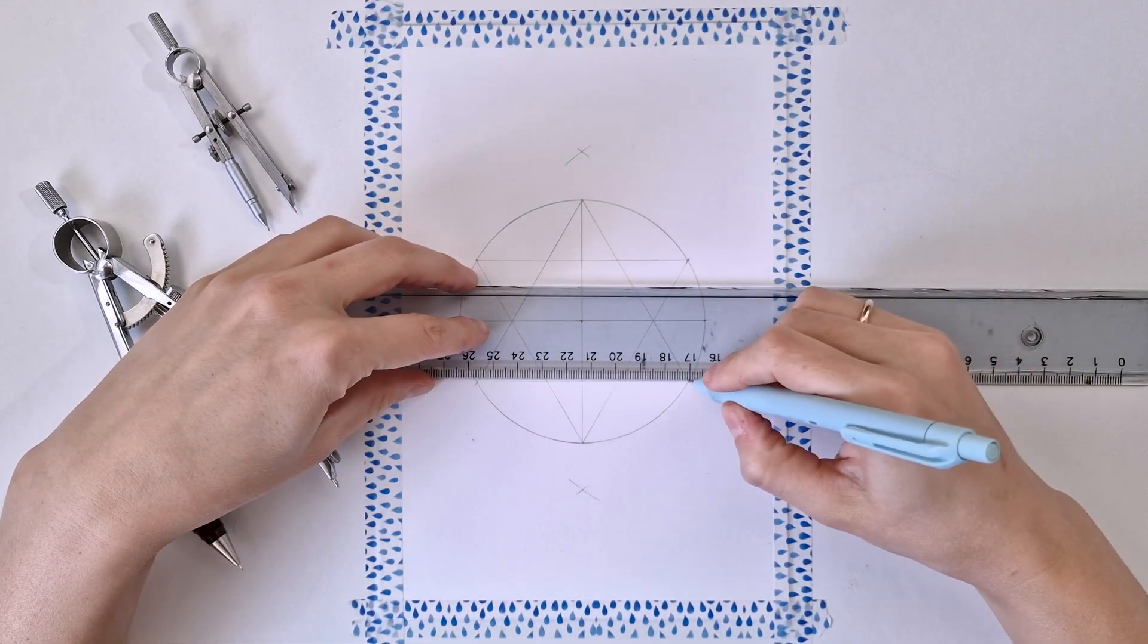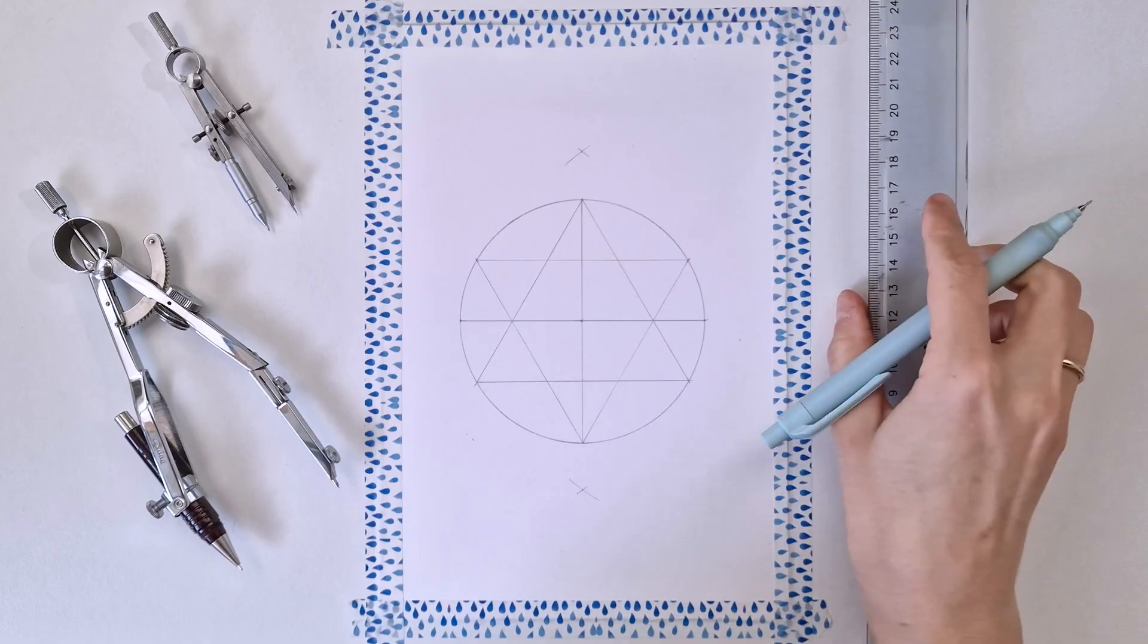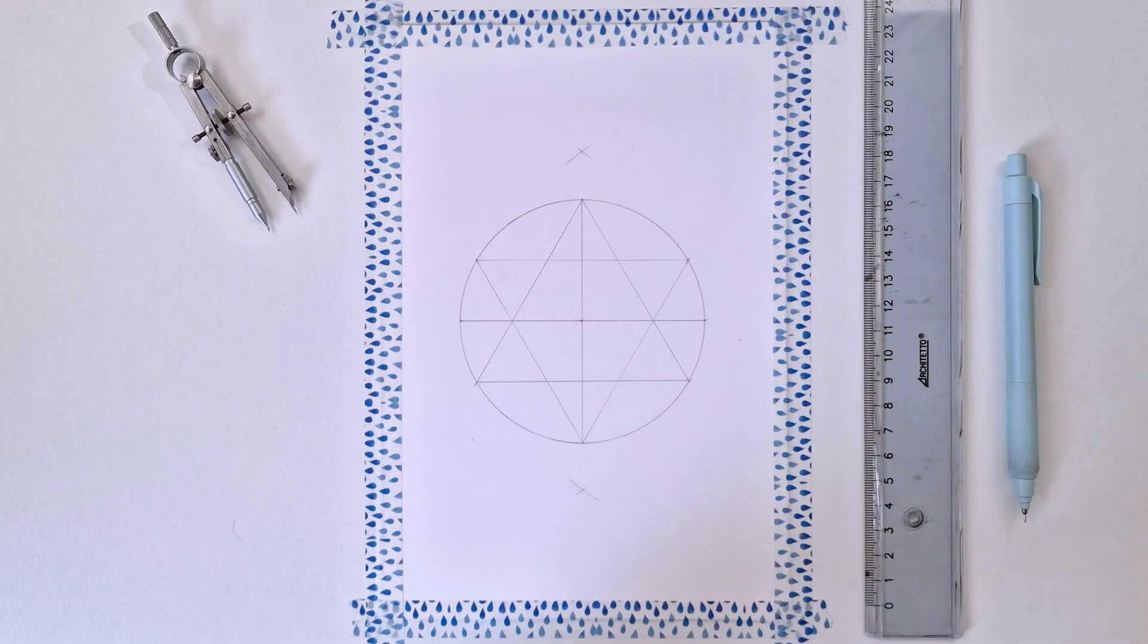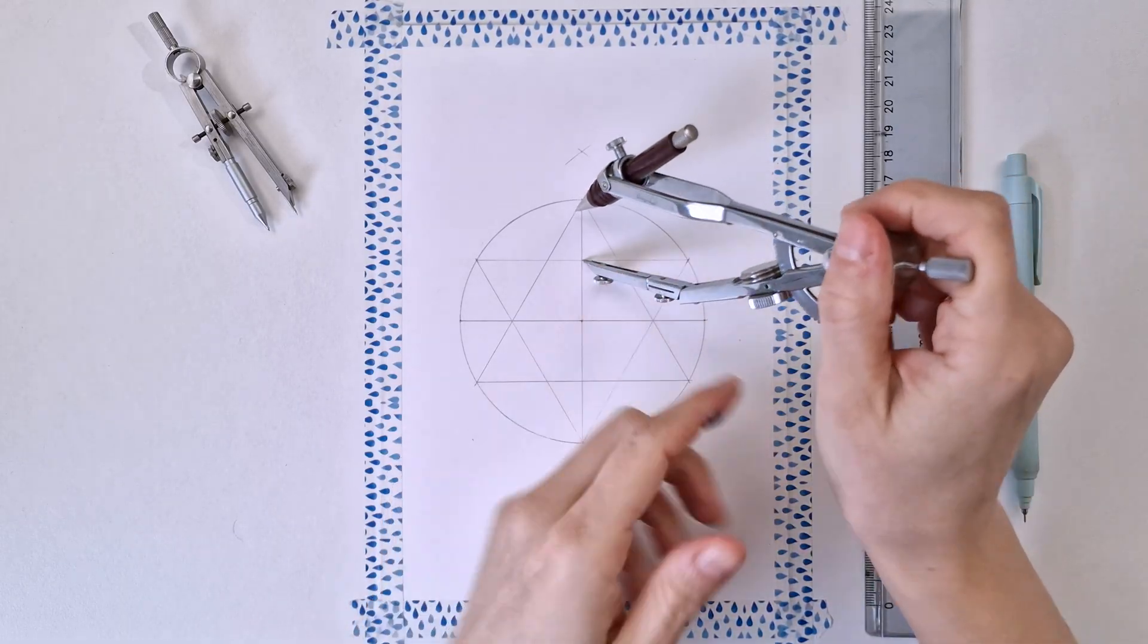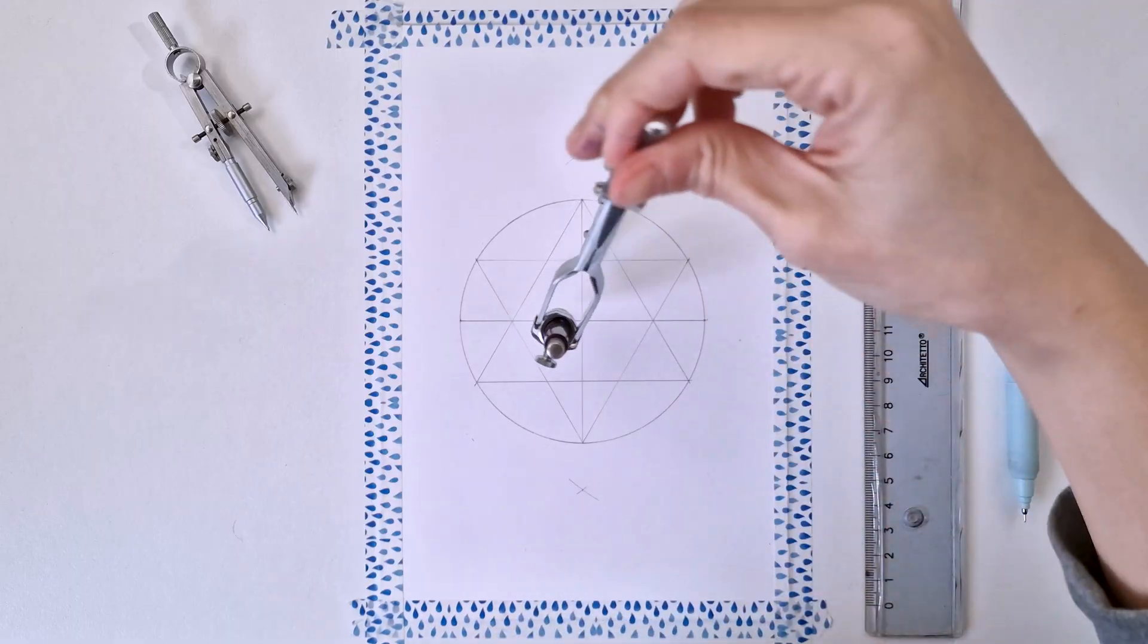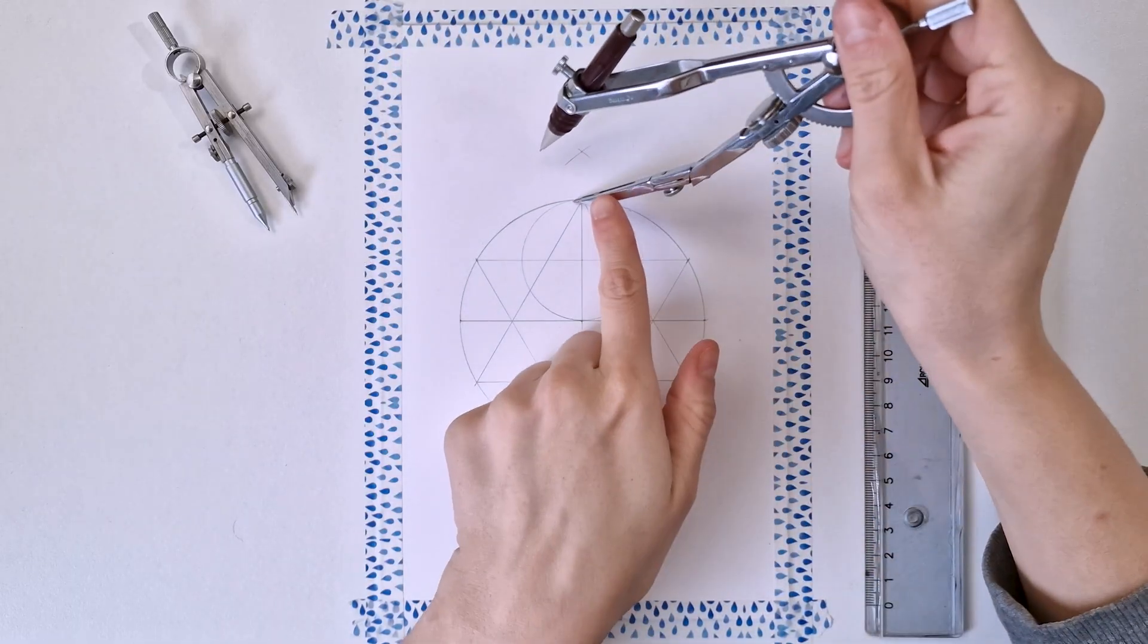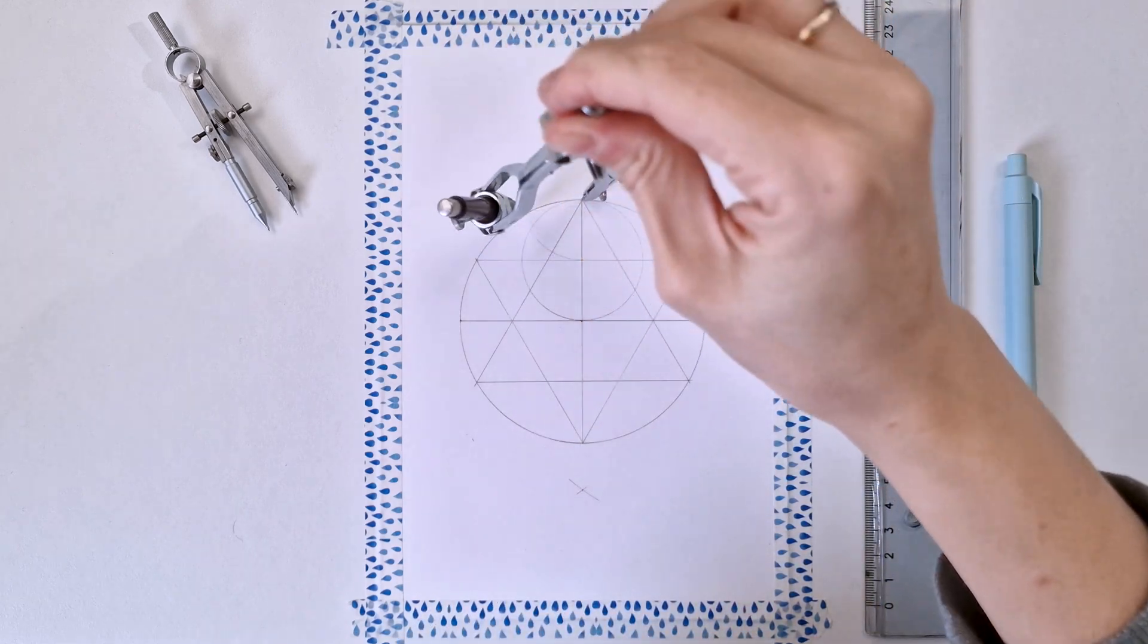Now that I have my two triangles, grabbing my compass back again, this time I'm opening using this opening to draw a circle. Actually, you don't need the whole circle. You can just use a semi-circle as I'm doing here.